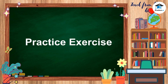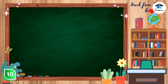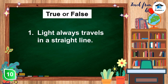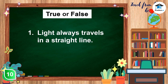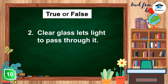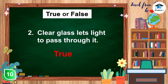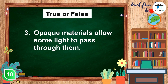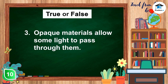Practice exercise. Let's check what you have learned. Tell true if the statement is correct and false if it is wrong. Light always travels in a straight line — the answer is true. Clear glass lets light pass through it — the answer is true. Opaque materials allow some light to pass through them — the answer is false.